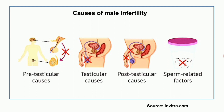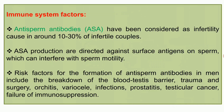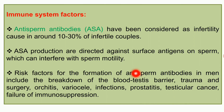Immune system factors can also cause male infertility. Anti-sperm antibodies (ASA) have been implicated as an infertility cause in 10–30% of infertile couples. ASA production is directed against surface antigens on sperm, which can interfere with sperm motility. Risk factors for ASA formation in men include breakdown of the blood-testes barrier, trauma, surgery, orchitis, varicella infection, prostatitis, testicular cancer, and failure of immunosuppression.